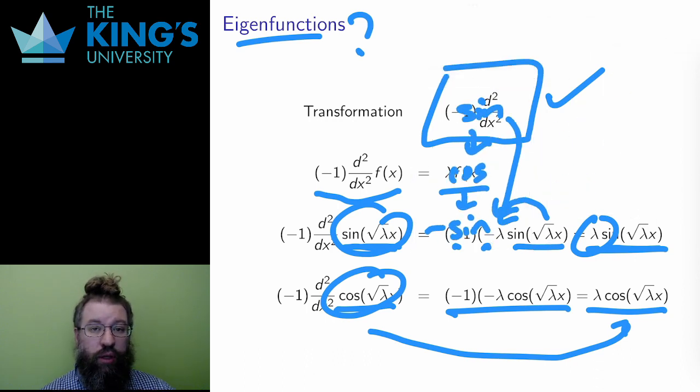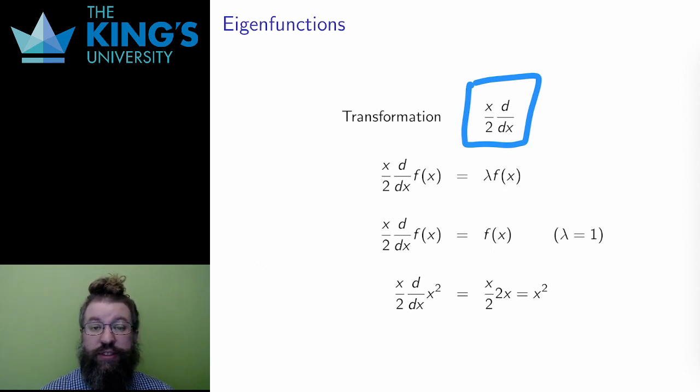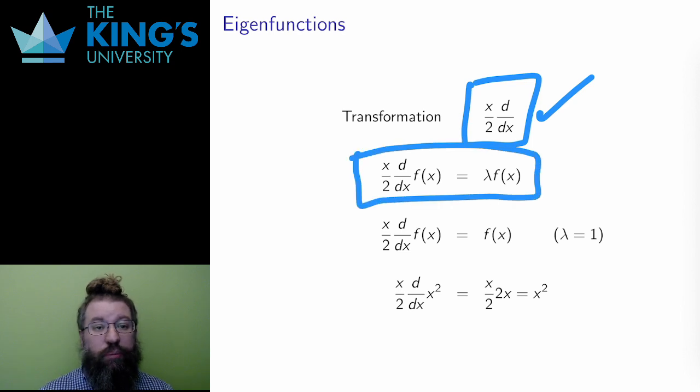Here is one more. The linear transformation here is x/2 times the derivative. This means take the derivative, and then multiply by x/2, and you can check if you wish, this is still linear. It still satisfies both of the linearity rules. What are the eigenfunctions of this transformation? I'm looking for some f such that if I take the derivative, and then multiply by x/2, I get the original f back multiplied by some constant λ.